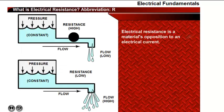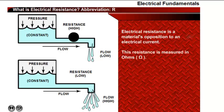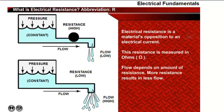Electrical resistance is a material's opposition to the flow of electric current, and this resistance is measured in ohms. Looking again at our water flow and pipe example, we're substituting water pressure for electrical voltage. If the water pressure flowing through the pipe remains constant, the flow at which water exits the pipe will depend on the amount of resistance the water meets as it passes through the pipe. As resistance increases, flow decreases.